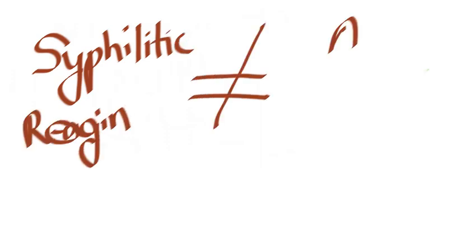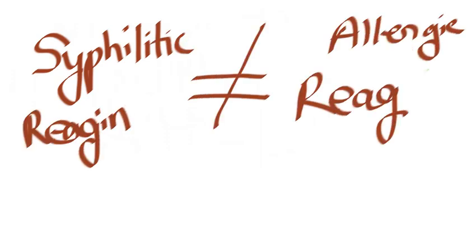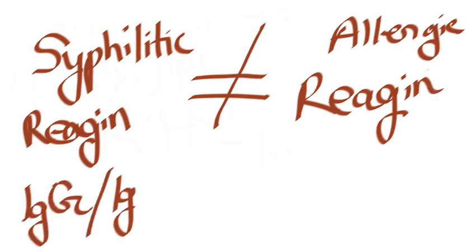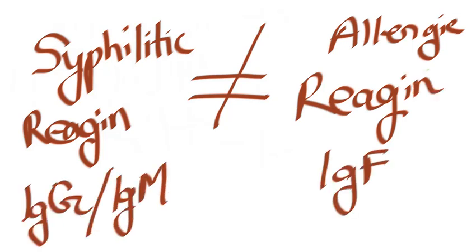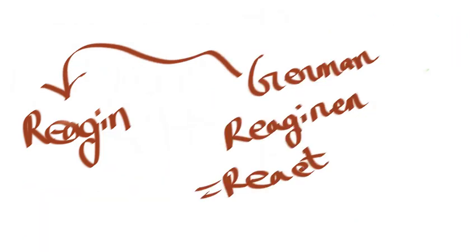Listen very, very carefully: Syphilitic Reagin, that is IgG and IgM, should never be confused with the Reagin antibody involved in allergy, which is IgE. Reagin comes from a German word 'Reageren' which means 'to react.' Do not get confused about these two concepts.